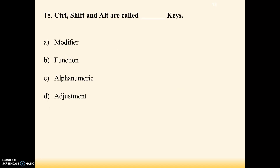Next question: Control (CTRL), Shift, and ALT keys on the keyboard are called which type of keys? Options are modifier, function, alphanumeric, adjustment. Answer is modifier. These three keys are called modifier keys — you should remember this answer as it is an important point.